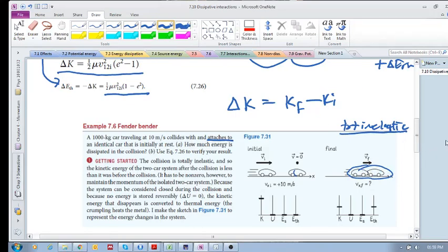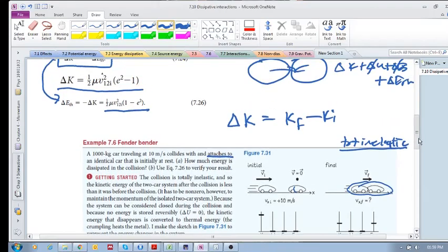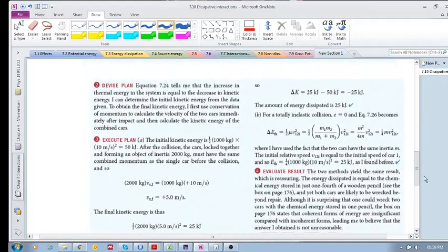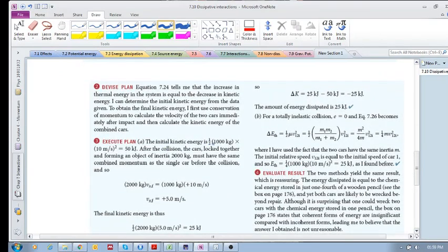So the initial kinetic energy—remember you've got two cars, one is going at 10 meters per second and they're both 1000 kilograms. We're only going to have the kinetic energy of the first vehicle: half times 1000 times 10 meters per second squared, so we get 50 kilojoules initial kinetic energy.